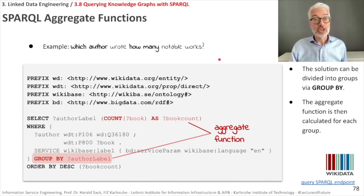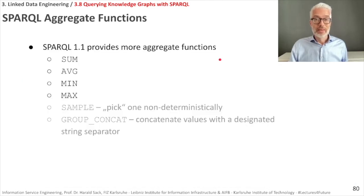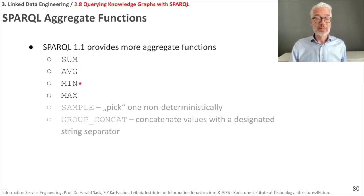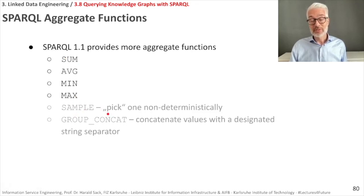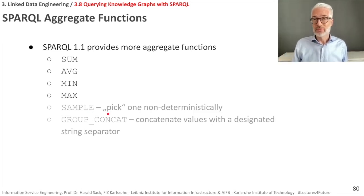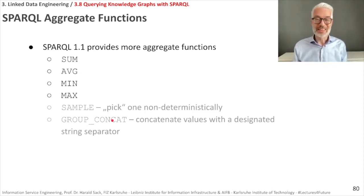That was the aggregation function. SPARQL 1.1 provides even more: SUM, AVG, MIN, MAX, SAMPLE, and GROUP_CONCAT. GROUP_CONCAT gives you the possibility to concatenate all results together connected via a separator value — for example a comma or a blank — putting them all in one line. Look it up in the reference if you want to use this.